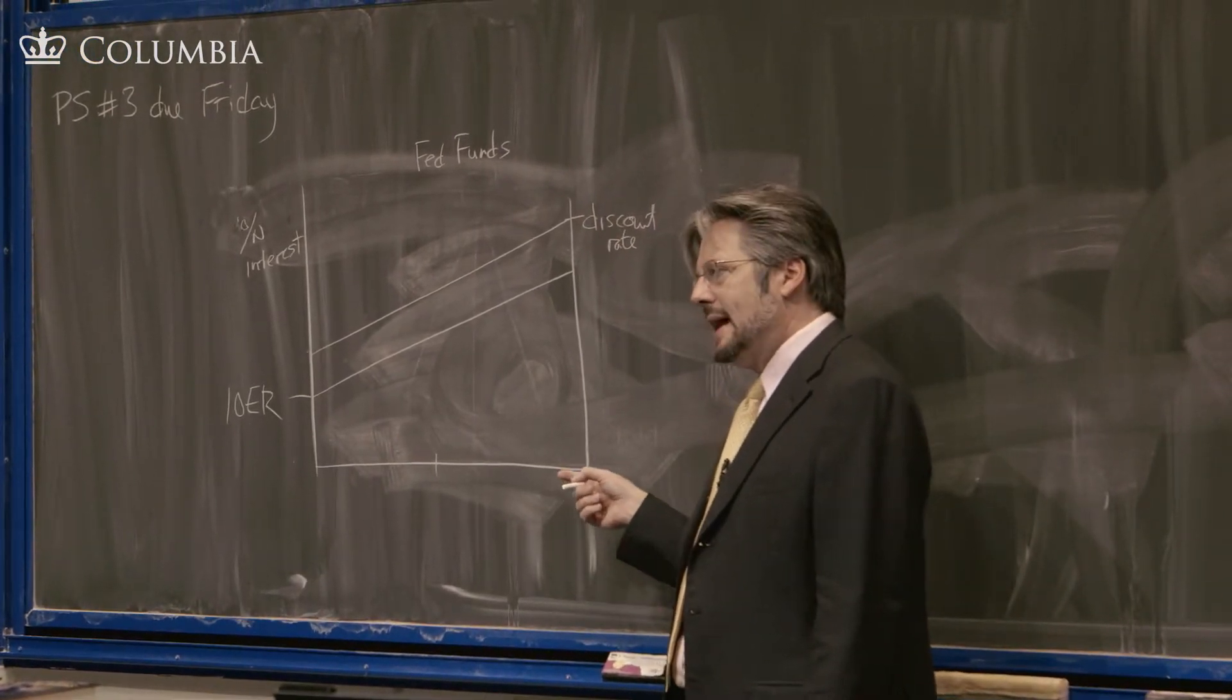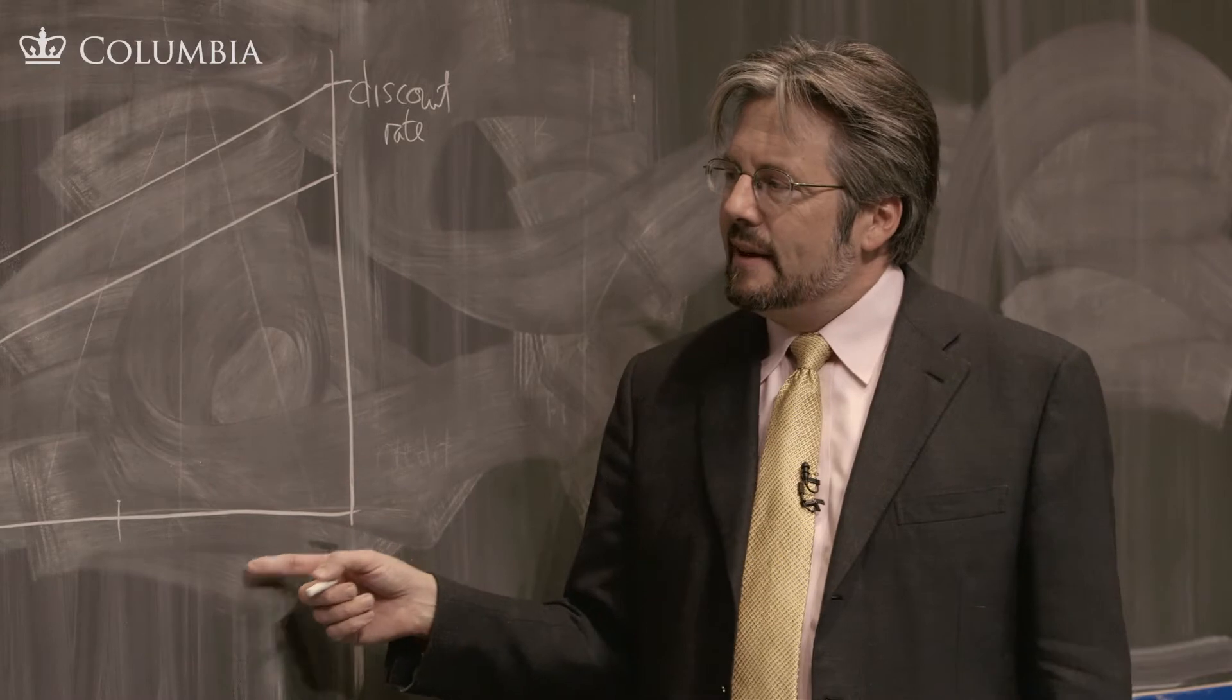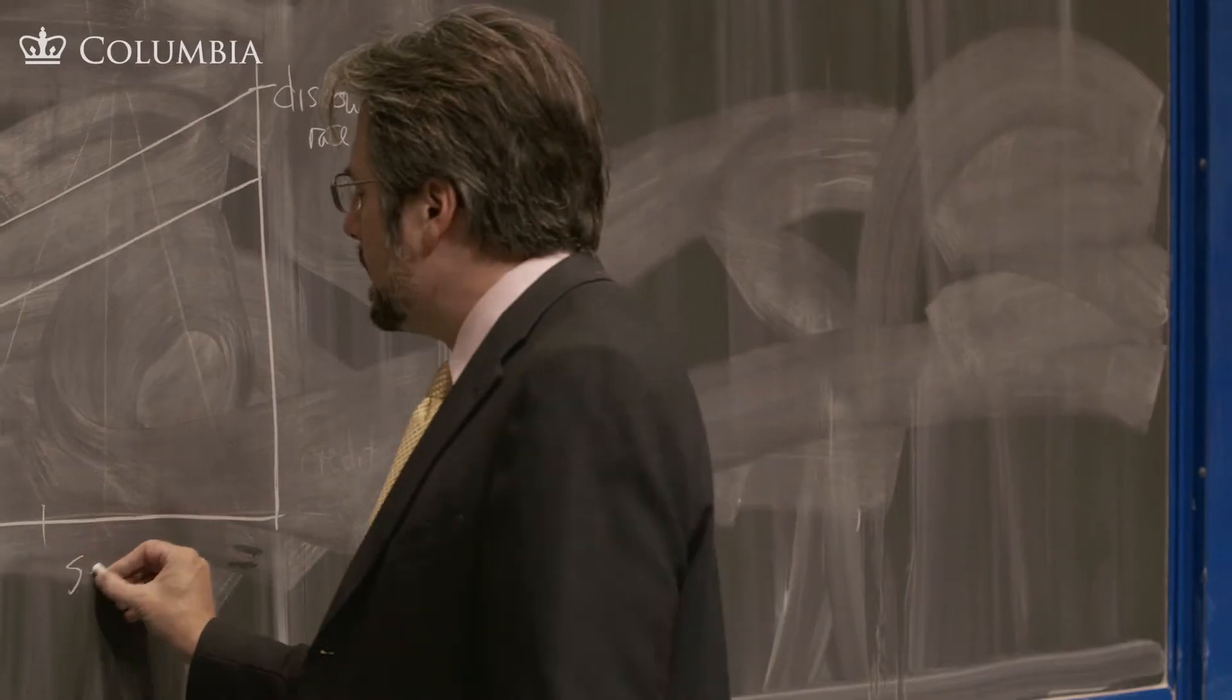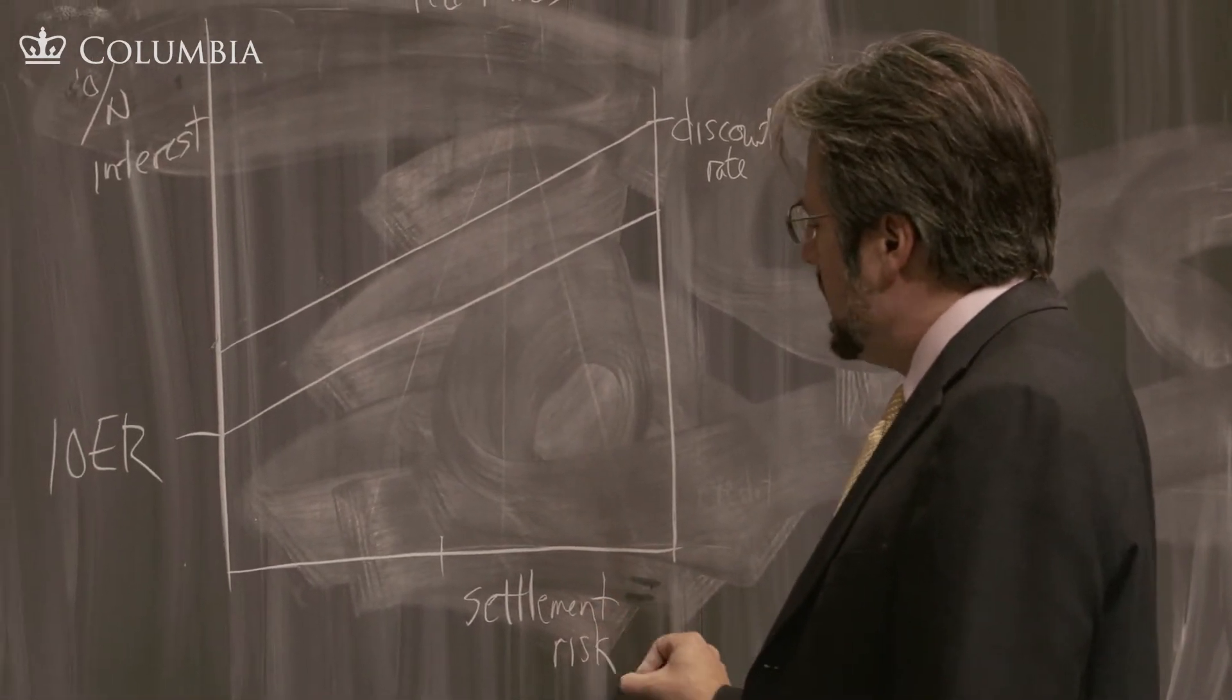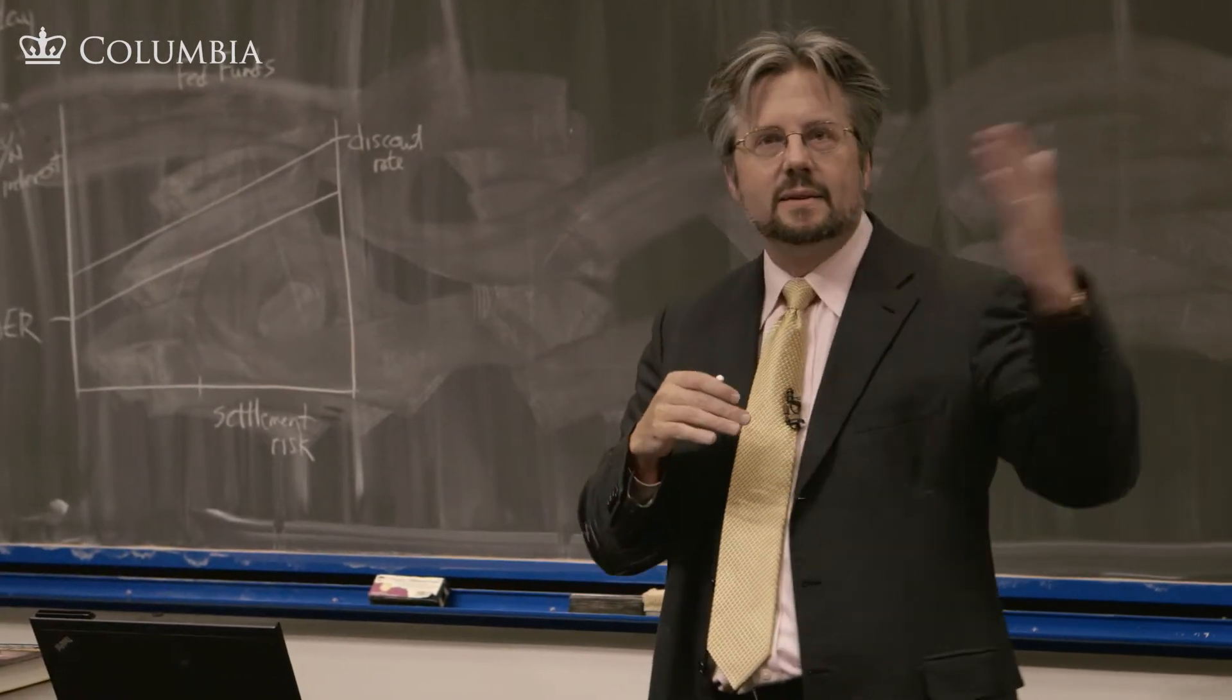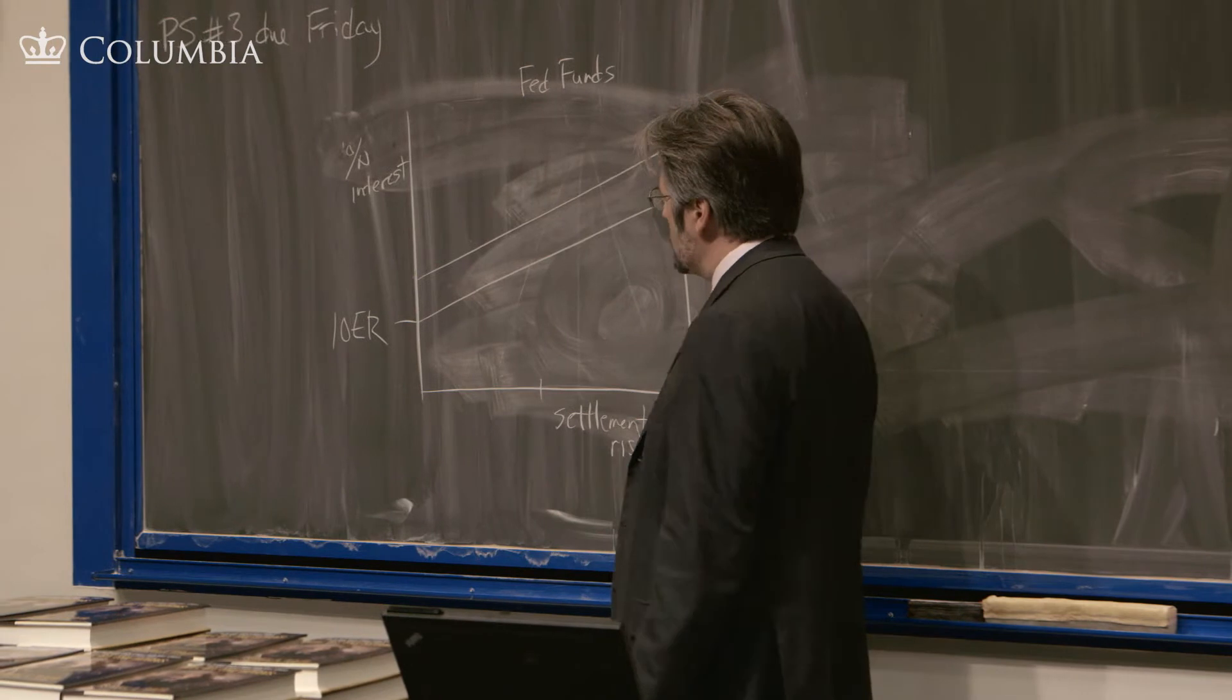I notice in my notes that I put on the horizontal axis here liquidity risk when I taught this on Monday. Let's have two different terms so that we don't confuse ourselves. Let's call this settlement risk here. Because we introduced the Fed funds market when we were talking about the payment system, and talked about how this allowed people to put off till tomorrow, borrow the reserves they need to clear their payments now. So, this is all about settlement risk overnight and short term here.